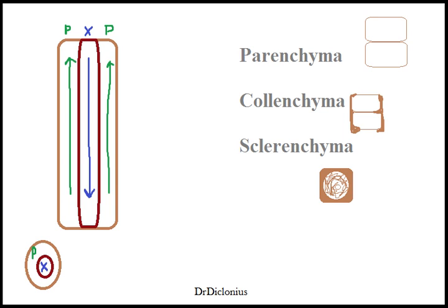For collenchyma, you can notice there's kind of unevenness — there's a thicker part of the cell wall and then a thinner part of the cell wall, so it's pretty much uneven. When you look for collenchyma, you look for unevenness in the cell wall. This is mainly for structural support.